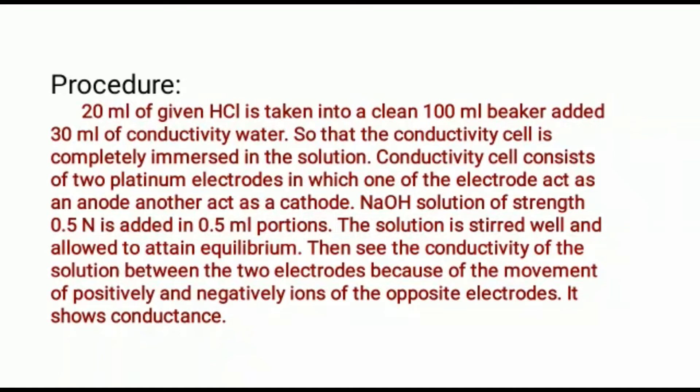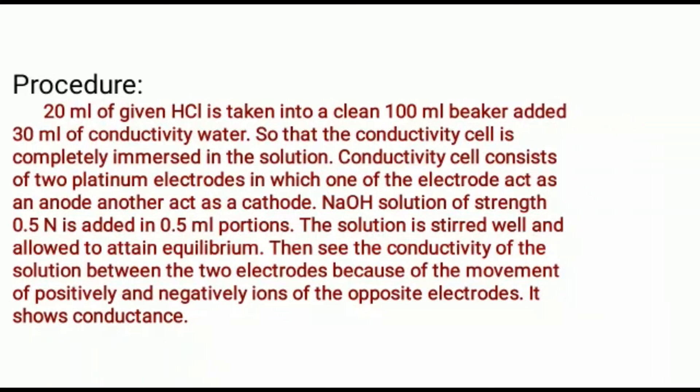The conductivity cell consists of two platinum electrodes, one acting as the anode and the other as the cathode. Sodium hydroxide solution of strength 0.5 N is added in 0.5 ml portions. The solution is stirred well and allowed to attain equilibrium. The conductivity is then measured between the two electrodes due to the movement of positive and negative ions toward the opposite electrodes.